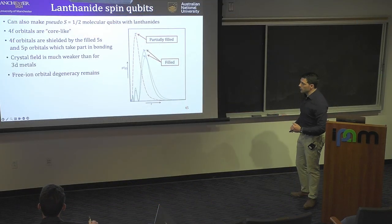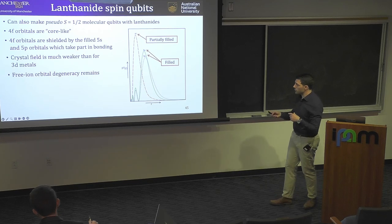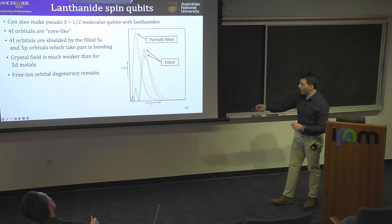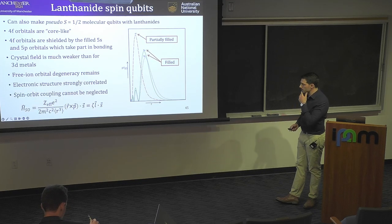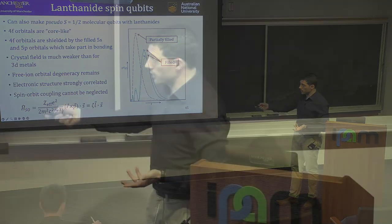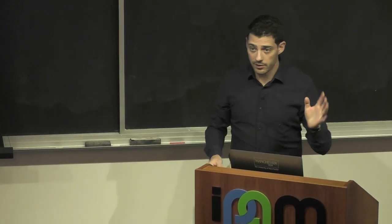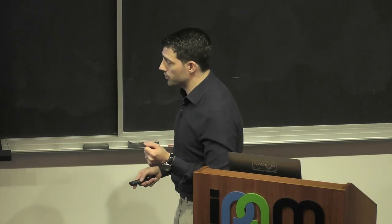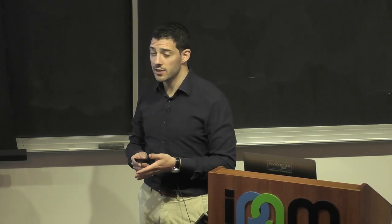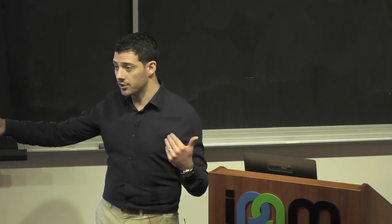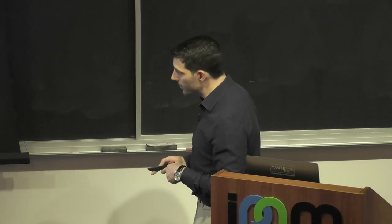Unlike the 3d orbitals, which split appreciably and dictate high/low spin electron configurations, you more or less have the same free-ion-like orbital angular momentum and various things. But it also means your electronic structure is strongly correlated — you cannot write a single determinant for the ground state. You need incredibly long expansions, and so you need explicitly multi-determinantal electronic structure theories if you want to describe it.